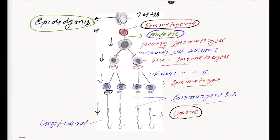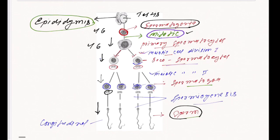Spermatogonia have 46 chromosomes, and in primary spermatocytes it remains 46 because they go through mitotic division — a division in which the number of chromosomes remains the same in the daughter cell as the parent. But when primary spermatocytes get converted into secondary spermatocytes, the chromosome number is reduced to 23, because this involves the meiotic process.